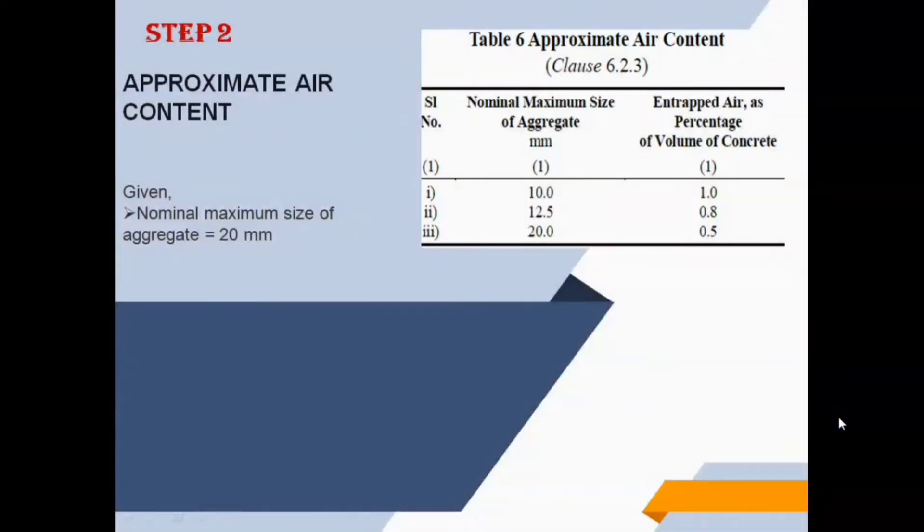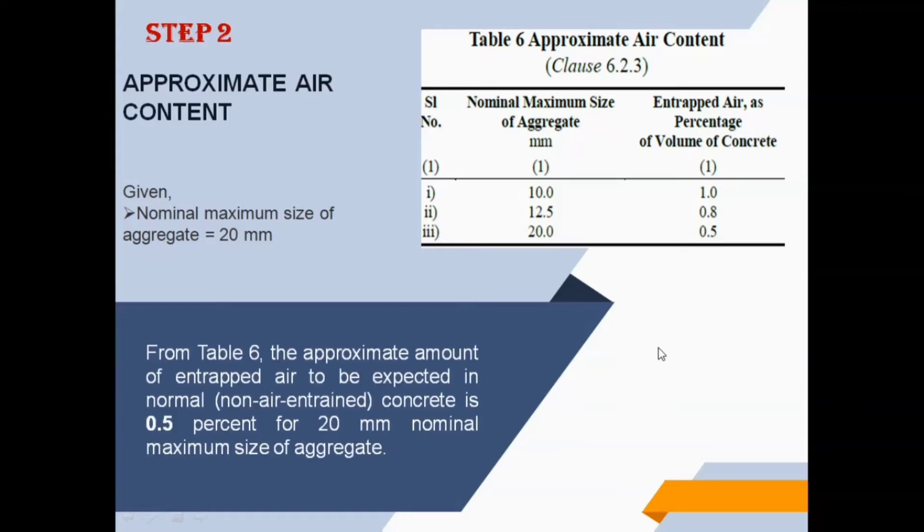Step 2: Approximate air content. Nominal maximum size of aggregate is taken as 20 millimeters. From Table 6, the approximate amount of entrapped air to be expected in normal concrete is 0.5% for 20 millimeters nominal maximum size of aggregate, 0.8% for 12.5 millimeters, and 1% for 10 millimeters.